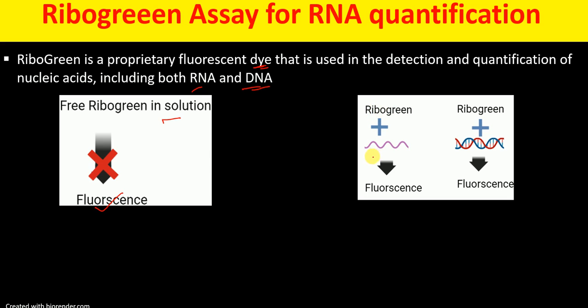But when RiboGreen binds to either RNA or DNA, the fluorescence increases over 1000-fold. So if you want to measure the concentration of RNA from RNA/DNA mixed samples, you have to pre-treat those samples with DNase.